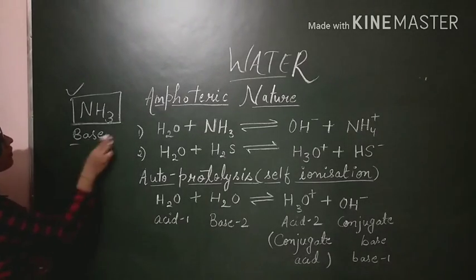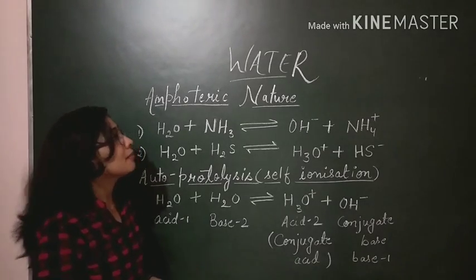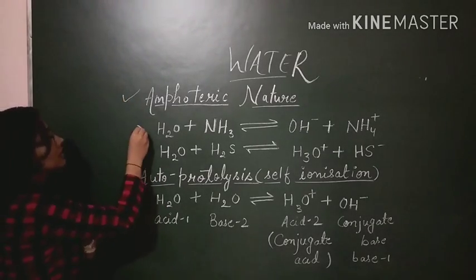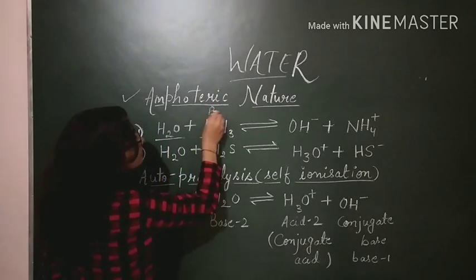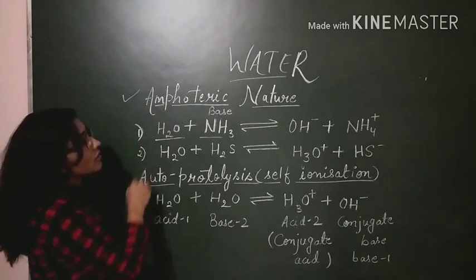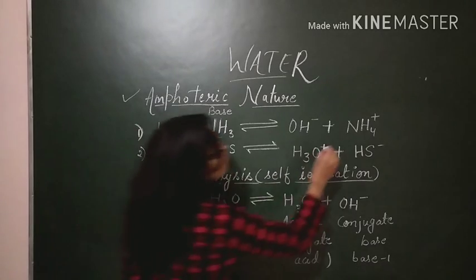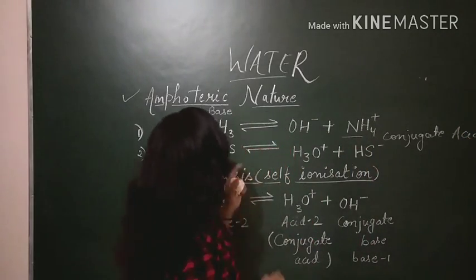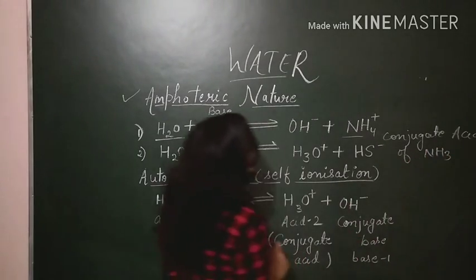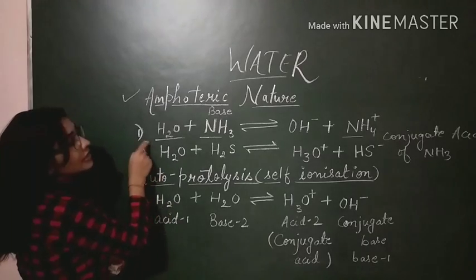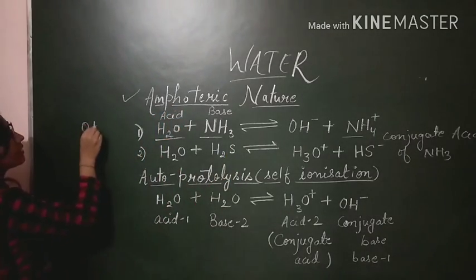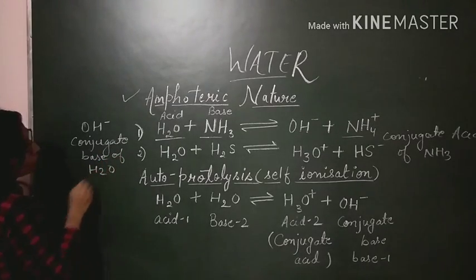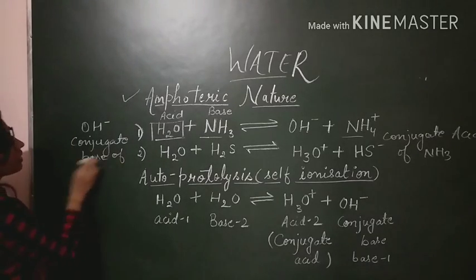Now we discuss the amphoteric nature of water. Since water is able to act as an acid as well as a base, it is considered amphoteric in nature. When H2O reacts with NH3 — which is a base — water reacts like an acid. It gives a proton to NH3, forming NH4 positive, the conjugate acid of NH3. Since water is donating a proton, OH negative here will be the conjugate base of H2O. So here H2O is acting like an acid.